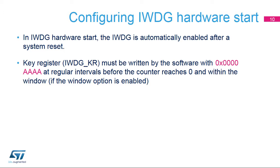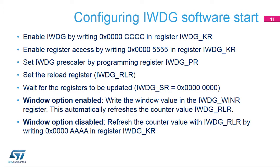The Independent Watchdog hardware is enabled by the device's option bytes. If hardware mode is enabled, after every system reset, the Watchdog automatically loads the down-counter with 0xFFF and starts to count down. To prevent any reset, the key register must be refreshed at regular intervals before the counter reaches 0, and within the window if that option has been selected. The IWDG software start is configured by first writing the key register with 0x0000CCCC, which starts the watchdog.